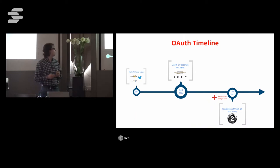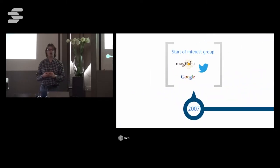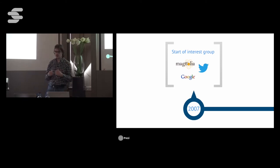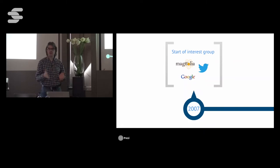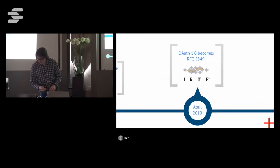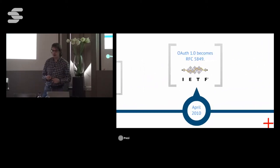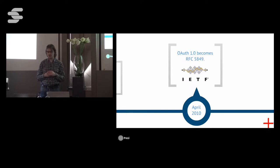I first want to talk about the OAuth2 timeline. The first step was taken eight years ago in 2007, when a couple of companies started an interest group to find solutions for the problem: how can we access data from someone else without requiring the password? Twitter was part of that and has always been behind the OAuth2 protocol. A couple of years later it became an internet standard with number 5849 — that is OAuth 1.0, the first version of the protocol.